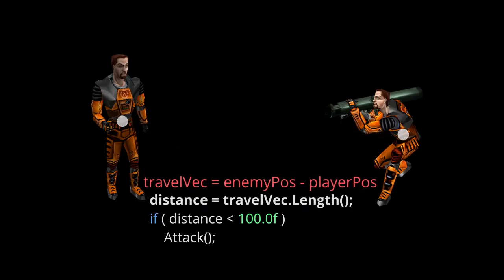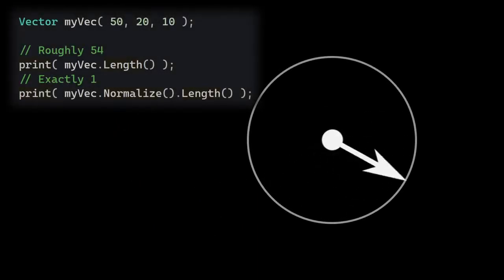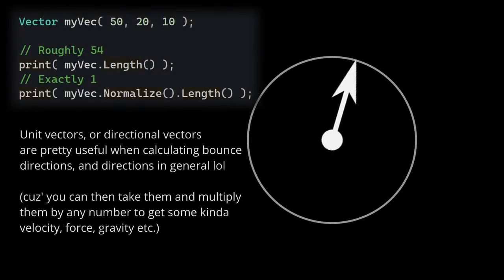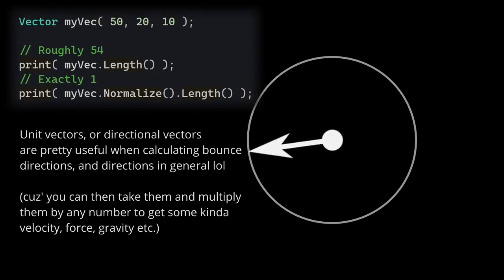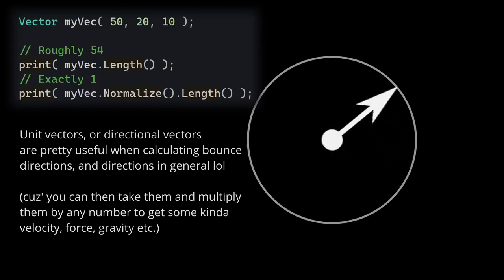Now, what if we're not interested in the length, but rather just the direction? We use normalize. Normalize will basically calculate a unit vector based on the current vector, and a unit vector is just a vector whose length is 1.